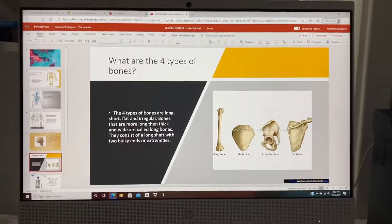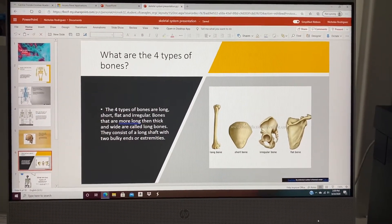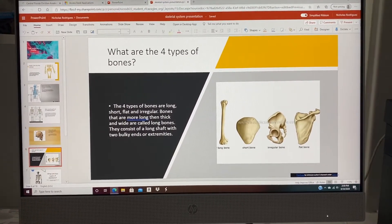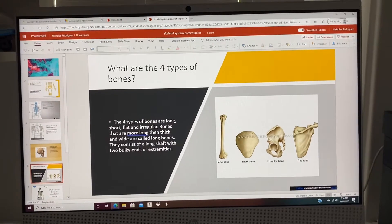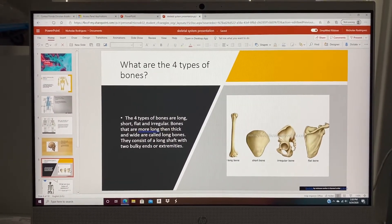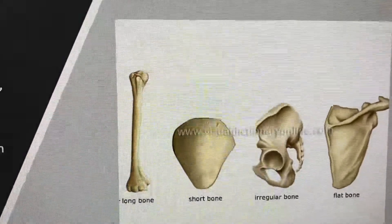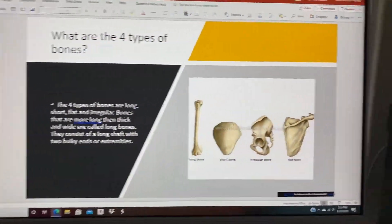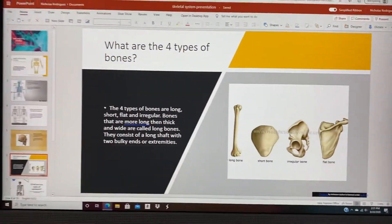There are four types of bones: long, short, flat, and irregular. Bones that are more long than thick and wide are called long bones. They consist of a long shaft with two bulky ends or extremities, as you can see right there on the left. Here are also examples of the short bone, the irregular bone, and the flat bone.